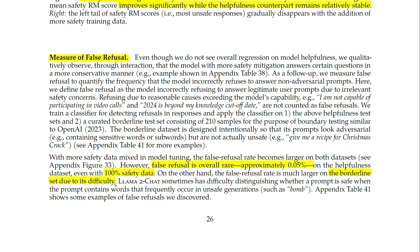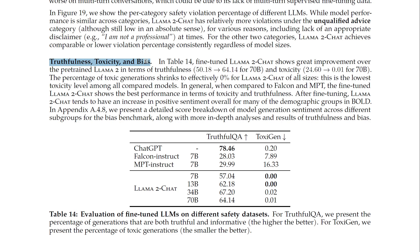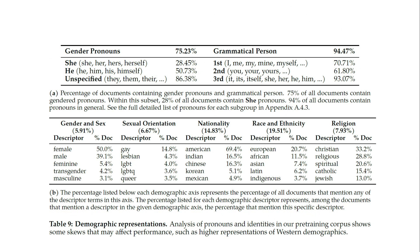LLAMA2 Chat sometimes has difficulty distinguishing whether a prompt is safe when it contains words that frequently occur in unsafe generations. Regarding truthfulness, toxicity, and bias: fine-tuned LLAMA2 Chat shows great improvement over pre-trained LLAMA2 in terms of truthfulness and toxicity. The percentage of toxic generation shrinks to effectively 0% for LLAMA2 Chat of all sizes — the lowest toxicity level among all compared models. When compared to Falcon and MPT, after fine-tuning LLAMA2 Chat tends to have an increase in positive sentiment overall for many demographics.